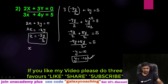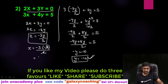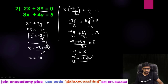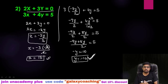Now keep this value of y in the expression for x: x equals minus 3 times minus 10 by 2. Cancel 2 — two fives are ten, but minus times minus is plus — and 3 times 5 is 15. So the value of x is 15 and the value of y is minus 10. This way we can solve this sum.